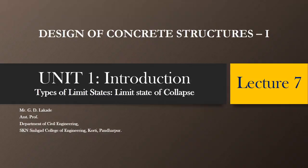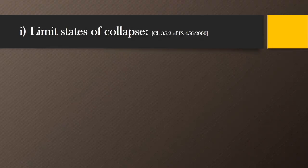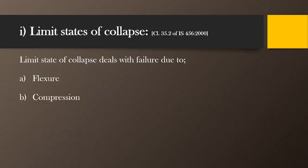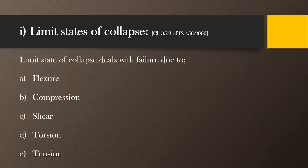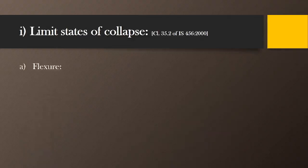Hello students and welcome to lecture number 7 in this series. In this lecture, we will discuss the limit state of collapse in detail again. As discussed in the previous lecture, the limit state of collapse can be considered in different ways — it deals with failures due to flexure, compression, shear, torsion, and tension. These are the possible reasons due to which the collapse or failure of any member will take place.